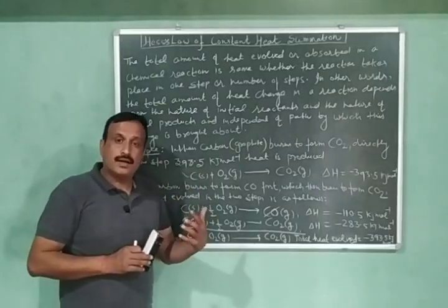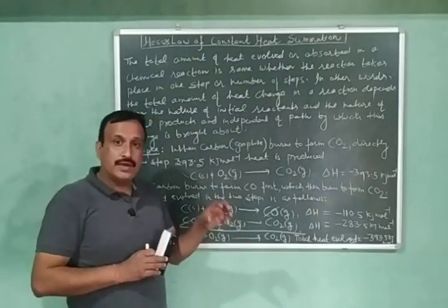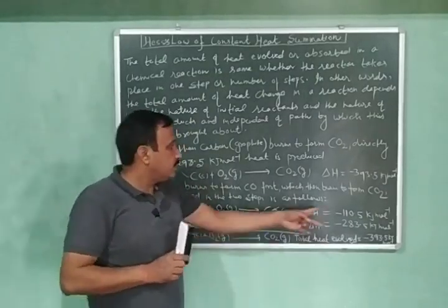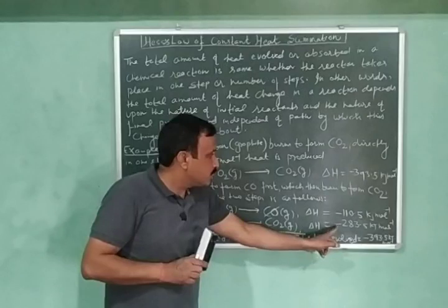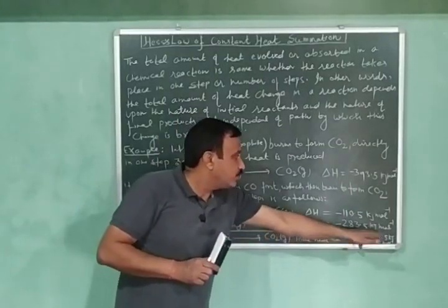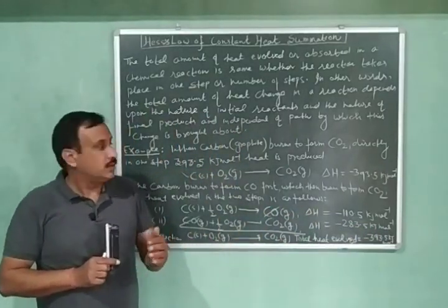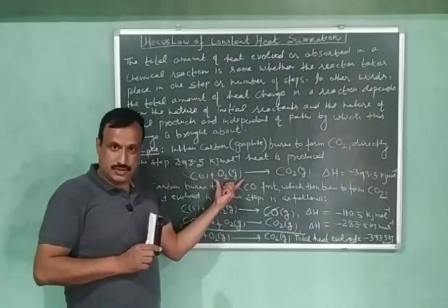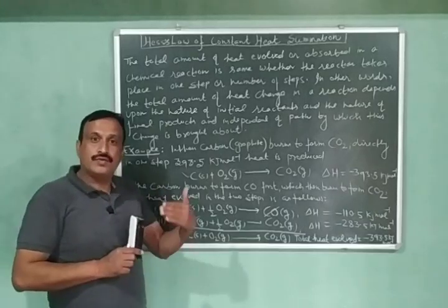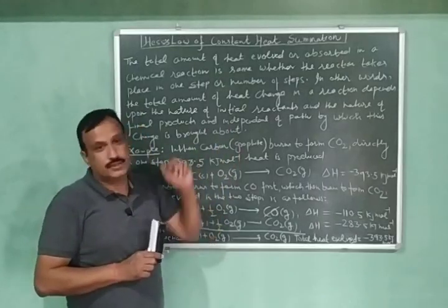And what will be the amount of heat released in this case? So it will be equal to the sum of heats evolved during these two steps. So when we added the heat evolved during these two steps, it came out to be the same. That is equal to minus 393.5 kilojoule. This means that doesn't matter whether the reaction is taking place in single step or in two steps. The amount of heat released remains the same. And this is according to Hess law.